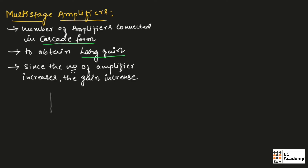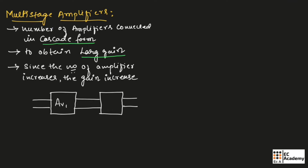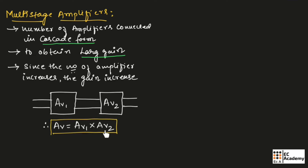Let us consider two amplifiers connected in cascade form. Let AV1 be the voltage gain of the first amplifier and AV2 be the voltage gain of the second amplifier. Therefore, the overall voltage gain AV will be equal to AV1 multiplied with AV2. If we take three or multiple amplifiers connected in cascade form, all the voltage gains will be multiplied.